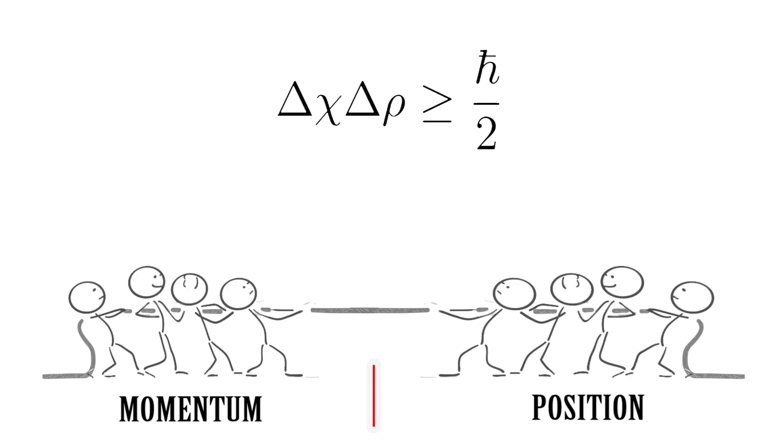Think of it as a game of tug-of-war between position and momentum. To play this game, we need a rope. Let's call this rope uncertainty. To accommodate all the players, the minimum length of uncertainty must be this constant value of half h over two.